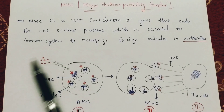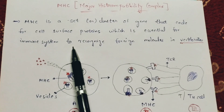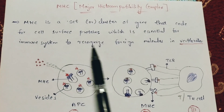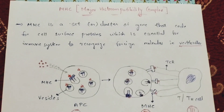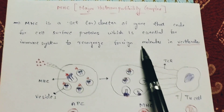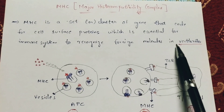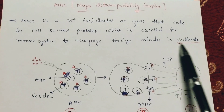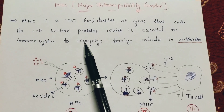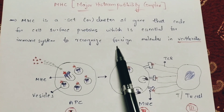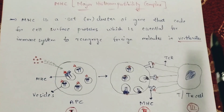The main function of MHC molecules is to recognize foreign molecules — that is, foreign antigens. It is very important to remember that these major histocompatibility molecules will recognize foreign antigens only in vertebrates, but not in invertebrates.